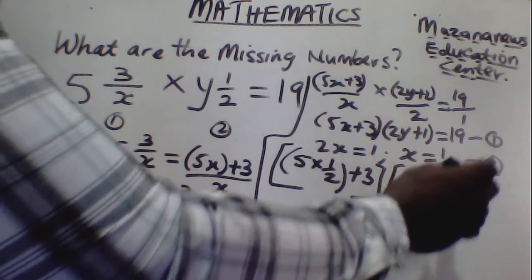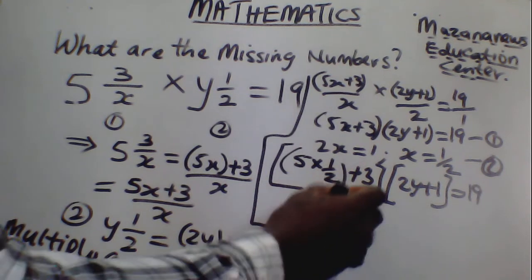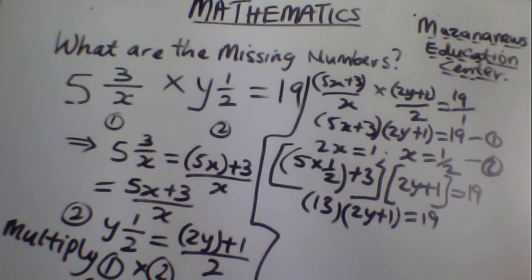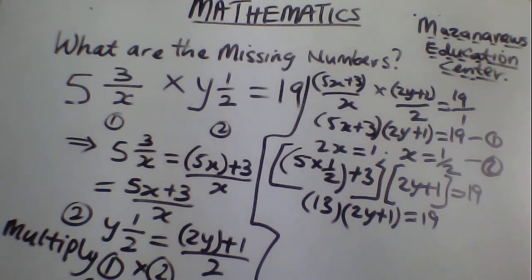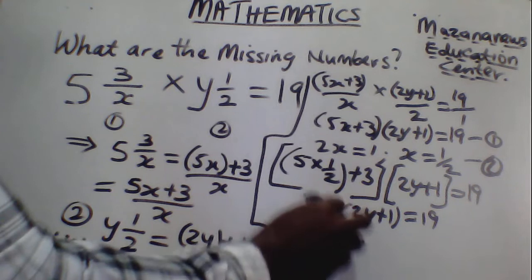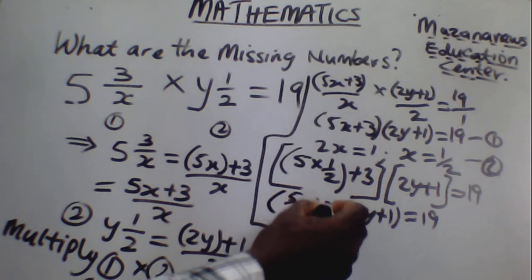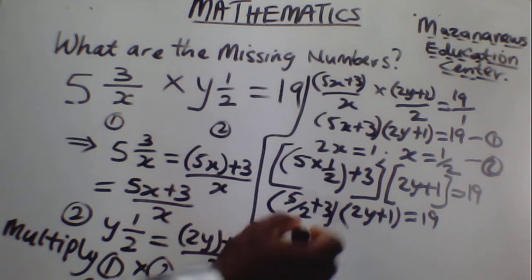So 2y plus 1 is equal to 19. Here, 2 times 5 will give us 10... wait, there is a problem here — sorry, we made a mistake. This is 5 over 2 plus 3, not 13. So we have 5 over 2 plus 3: 2 times 3 gives us 6, plus 5 is 11, giving us 11 over 2.